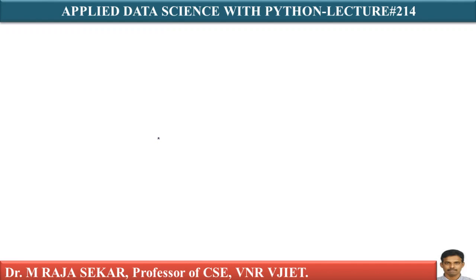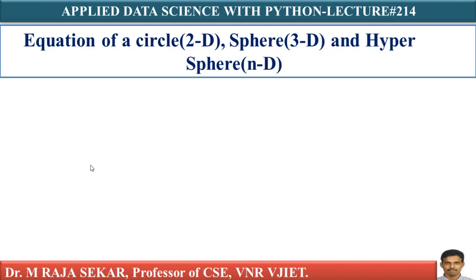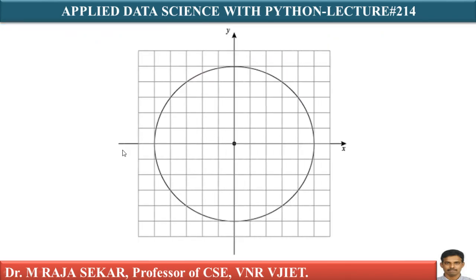Welcome to Rajashekar Classes on Applied Data Science with Python. This is lecture number 214. In this lecture we will try to understand circle, sphere, and hypersphere. It is a simple, elementary lecture. Since we already learned about lines, now let's learn about other structures like circle and sphere, which we studied in high school. We'll also explore their equivalent concepts in 3D and higher dimensions.